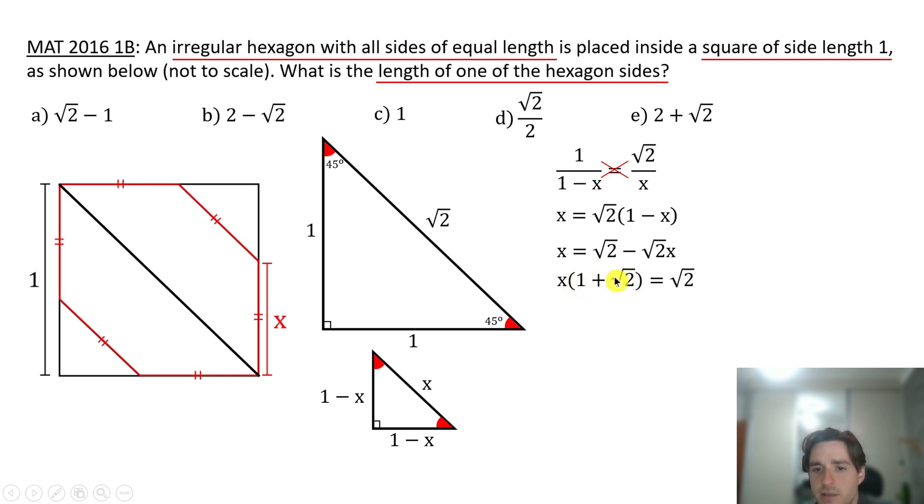We are going to pass this expression dividing to the other side to obtain that x equals square root of two divided by one plus square root of two. But see, we don't have this option here, so now let's try to rationalize the denominator. To do so, we have to multiply the numerator and denominator by the denominator conjugate, which is one minus square root of two.